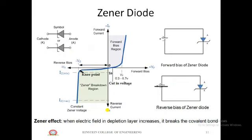Next, we look at the Zener diode. The Zener diode is a PN junction diode but it is heavily doped. It mainly operates in the reverse bias region. Under reverse bias, a small negligible current flows across the junction, and at a knee point there is a breakdown — current becomes maximum while the voltage remains constant.